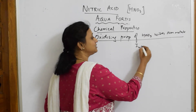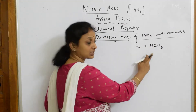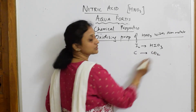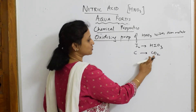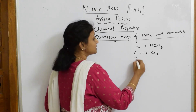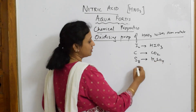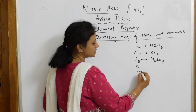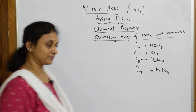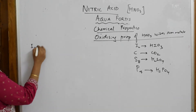HNO₃ is going to oxidize iodine to iodic acid (HIO₃), carbon to carbon dioxide (CO₂), sulfur to sulfuric acid (H₂SO₄), and phosphorus (P₄) to phosphoric acid (H₃PO₄). That's straightforward — let's now write the reactions.